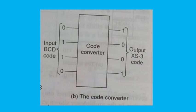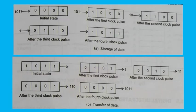A logic circuit used to convert information coded in one form to another form is called a code converter. The figure shows the block diagram of a BCD-to-XS3 code converter. It illustrates conversion of decimal digit 6, coded as 0110 in 8421 BCD form, to 1001 in XS3 form.